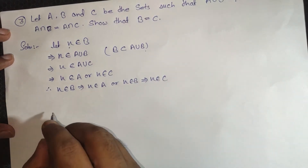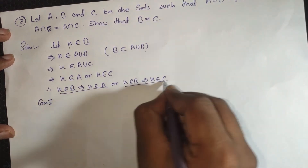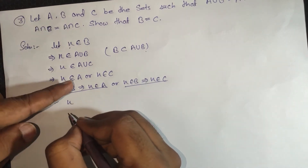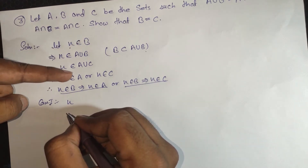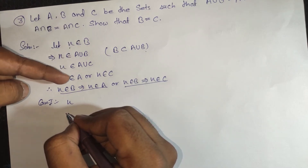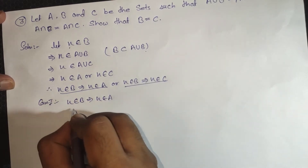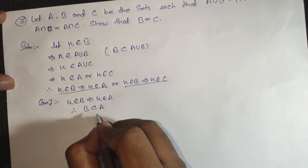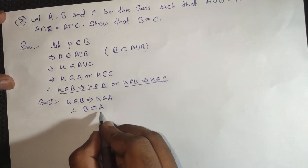So we have two cases here. In Case 1, when X belongs to B and X belongs to A — because when X belongs to B, either it belongs to A or to C, so we check both. When X belongs to B implies X belongs to A, thus B is a subset of A.